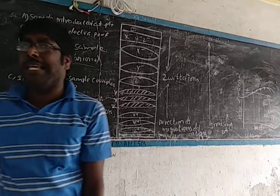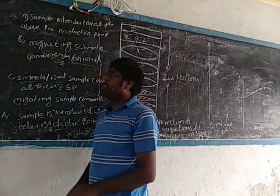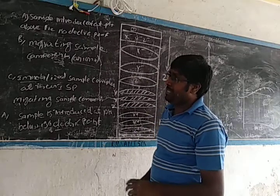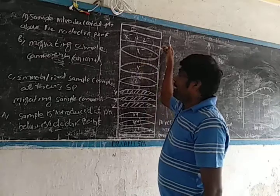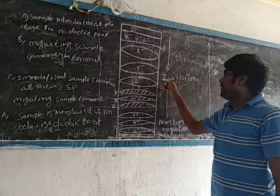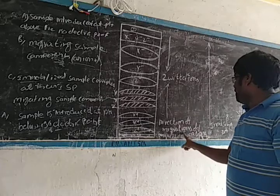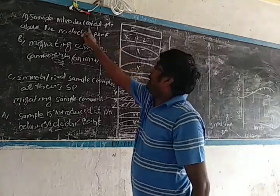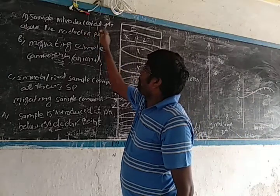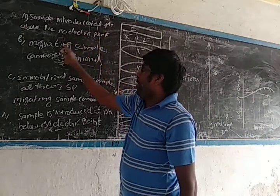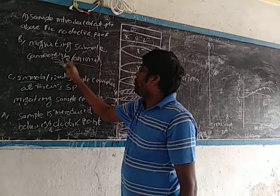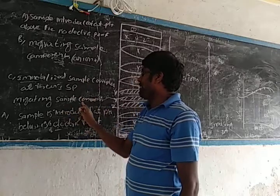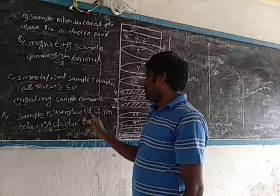Now we have to talk about isoelectric focusing and its chemistry system. This involves the direction of migrating ions and the energy associated with them. We have to consider the samples, their immobilization, and the differences in their detection based on migrating sample components.